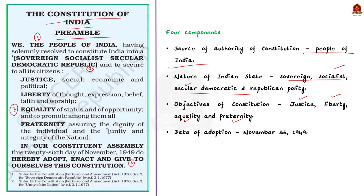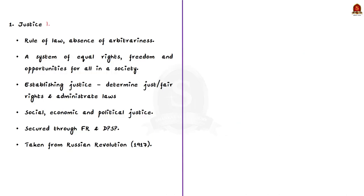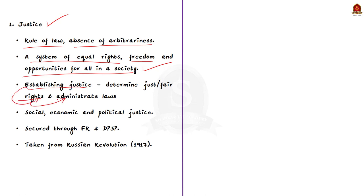Let us take justice first. Justice stands for the rule of law, absence of arbitrariness, and a system of equal rights, freedom and opportunities for all in a society. Establishing justice means to have rights and administrative laws that are just and fair to all citizens. The term justice in the preamble embraces three distinct forms: social, economic and political. This is secured through various provisions of the fundamental rights and directive principles. Note that the ideal of social, economic and political justice has been taken from the Russian revolution.